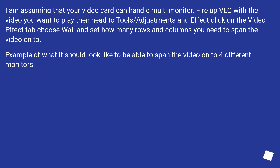Assuming that your video card can handle multi-monitor, fire up VLC with the video you want to play, then head to Tools > Adjustments and Effects. Click on the Video Effects tab, choose Wall, and set how many rows and columns you need to span the video onto.